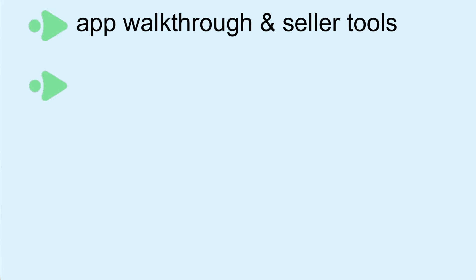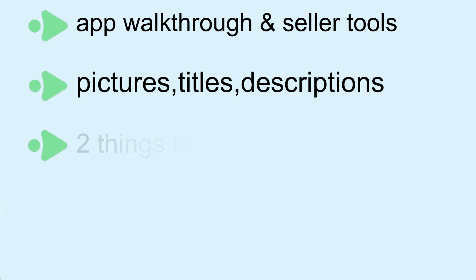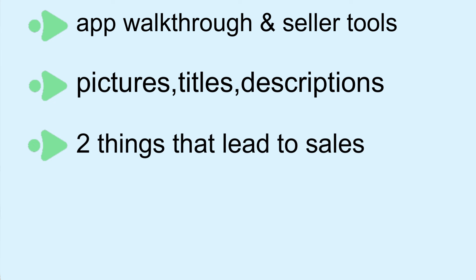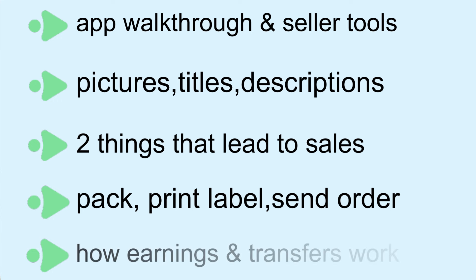The only thing you need to start selling on Poshmark is your phone, and this five-part video is going to show you how. Part one is an overview of the Poshmark app and seller tools. Part two covers the entire listing process, from taking pictures to creating titles and descriptions. Part three is about making sales and the two things you need to do every day. Part four covers shipping — packing orders, getting your label with or without a printer, and sending the package. Part five is all about getting paid — where to see your earnings and how to transfer to your bank.